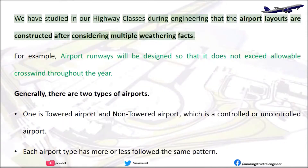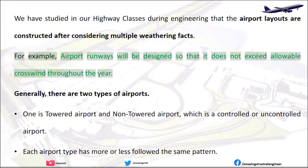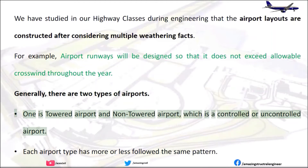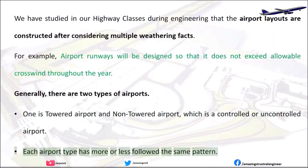We have studied in our highway classes during engineering that airport layouts are constructed after considering multiple weathering facts. For example, airport runways will be designed so that they do not exceed allowable crosswind throughout the year. Generally, there are two types of airports: towered airport and non-towered airport, which is a controlled or uncontrolled airport. Each airport type has more or less followed the same pattern.